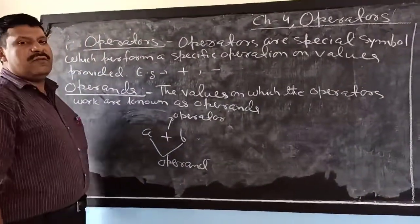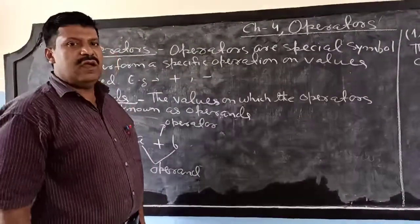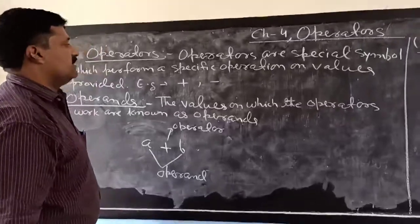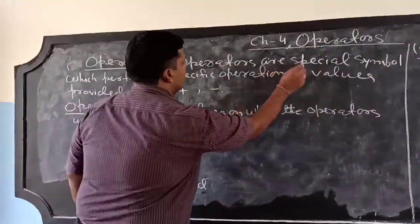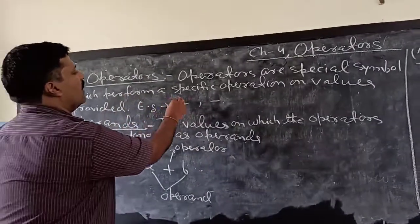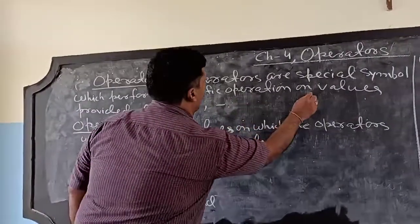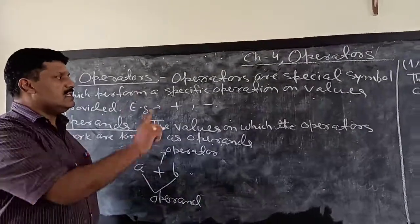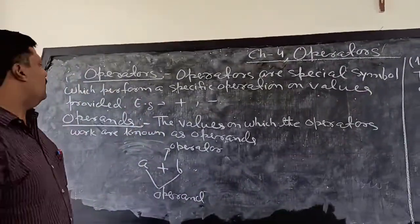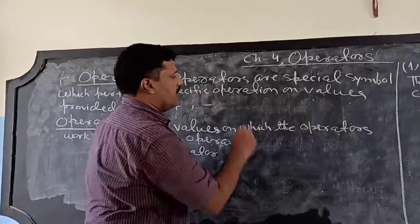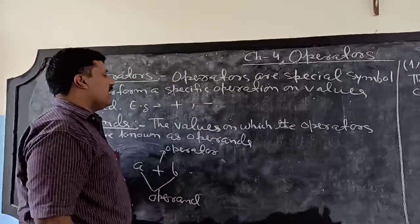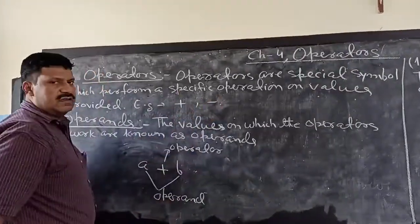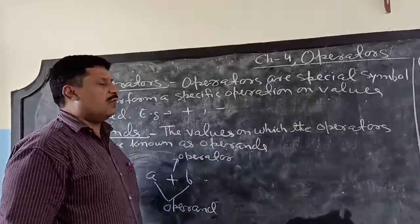We have different types of operators in Java. Let us first discuss what is the definition of operators. Operators are special symbols which perform a specific operation on values provided. For example, a plus sign, a minus sign — these are operators. These are mathematical operators.